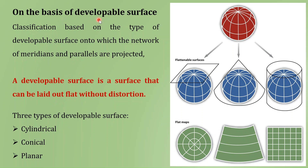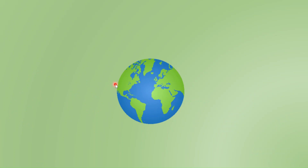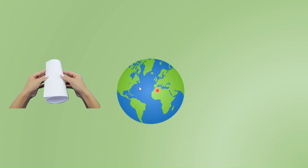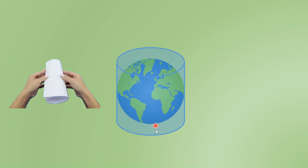The second classification is on the basis of the developable surface onto which the network of meridians and parallels are projected. A developable surface is a surface which can be laid out flat without distortion. Three types of developable surfaces are there: cylindrical, conical, and planar. Here we have the globe of our earth. If we fold a paper in the form of a cylinder and place it around the globe such that the axis of the cylinder is parallel to the polar axis of the earth, this type of projection is referred to as the cylindrical projection.